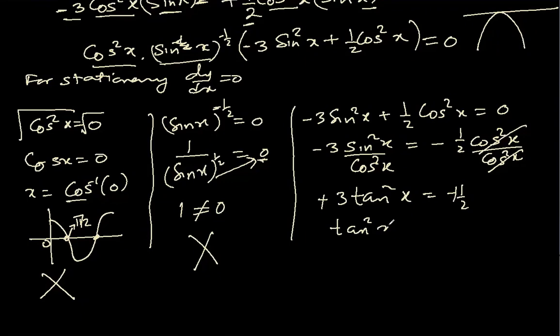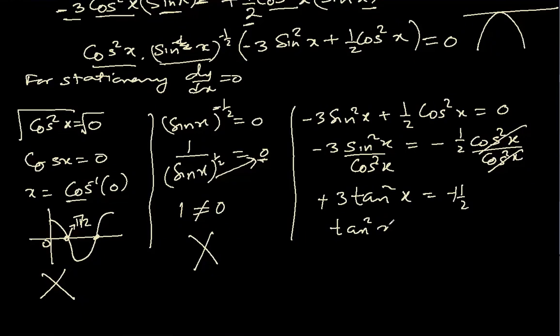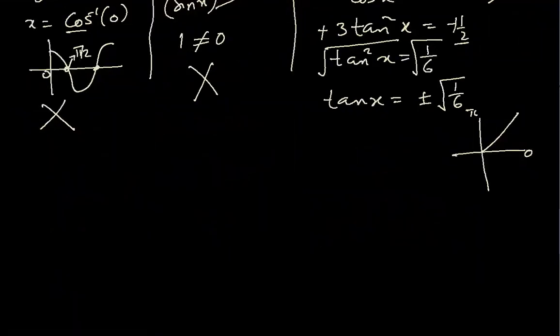That means square root, so tan x is plus and minus square root 1/6. From 0 to π/2, that means we have to just focus on the first quadrant. Because this is 0, this is π/2. And in this quadrant tan is positive, that means negative is gone. We will not even look at negative. x is tan inverse square root 1/6.